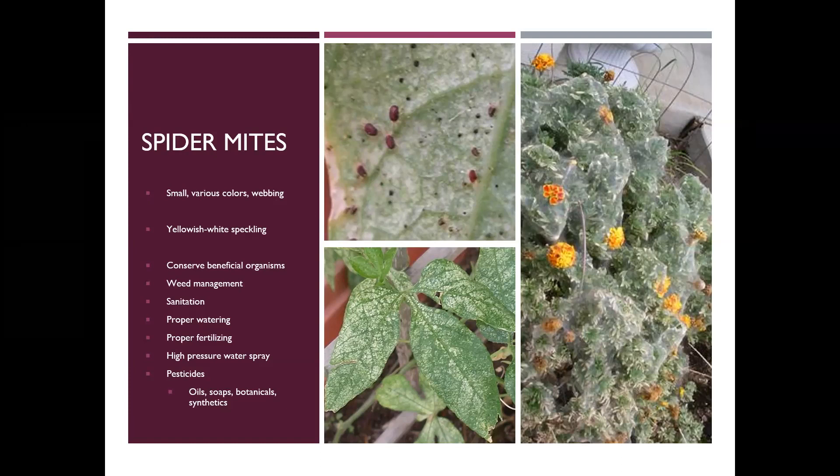There are also botanical products you can utilize — things like azadirachtin, which is known as neem. You can also use spinosad on these, which works well on things that chew foliage, so the mites would actually consume it. Pyrethrum is another botanical, a low-impact product, but it is broad spectrum — so you will kill your beneficials if they come into contact with that product as well.